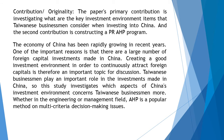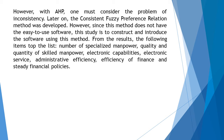AHP is a popular method on multi-criteria decision-making issues. However, with AHP, one must consider the problem of inconsistency. Later on, the consistent fuzzy preference relation method was developed. However, since this method does not have easy-to-use software, this study is to construct and introduce the software using this method.